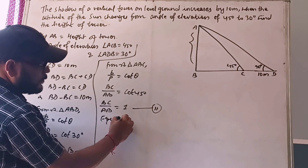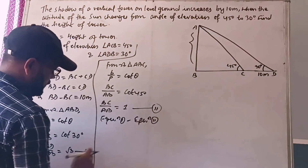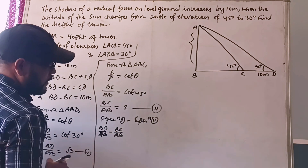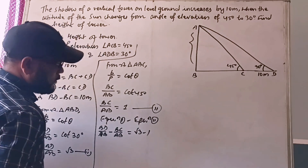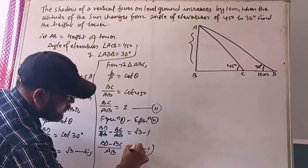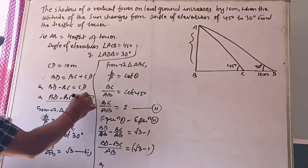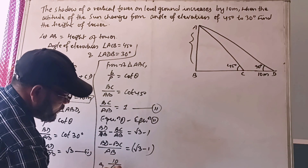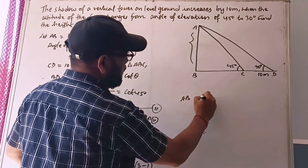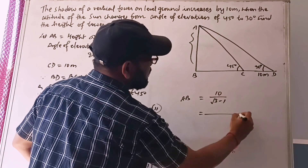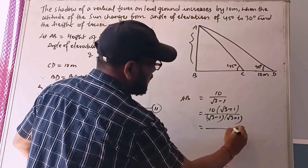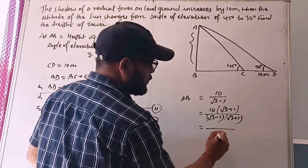Now subtract equation 2 from equation 1: (BD - BC) / AB = √3 - 1. The value of BD minus BC is 10 meters, so AB = 10 / (√3 - 1). To solve, rationalize by multiplying numerator and denominator by (√3 + 1), giving 10(√3 + 1) / (3 - 1) = 10(√3 + 1) / 2.